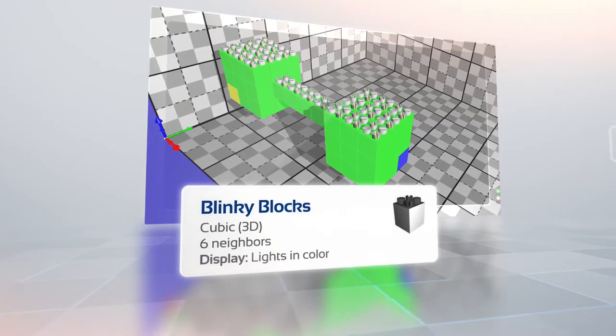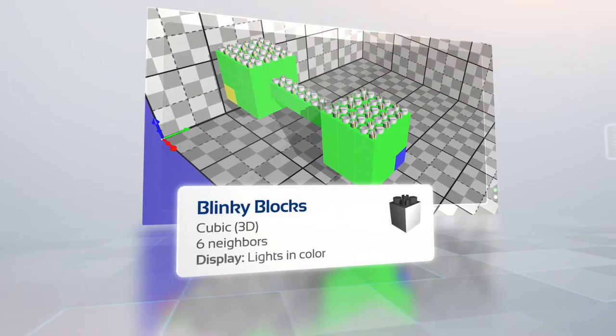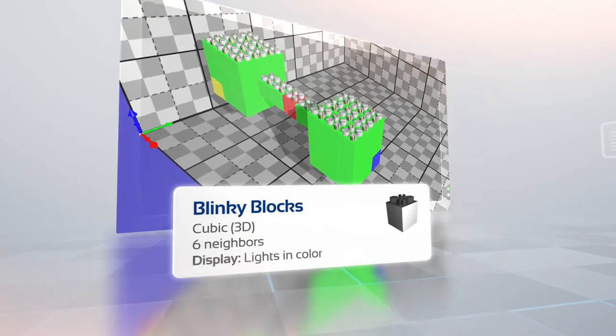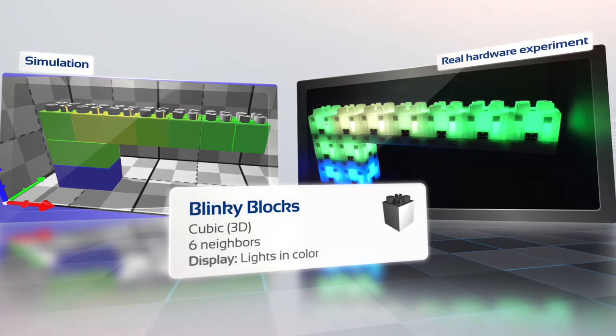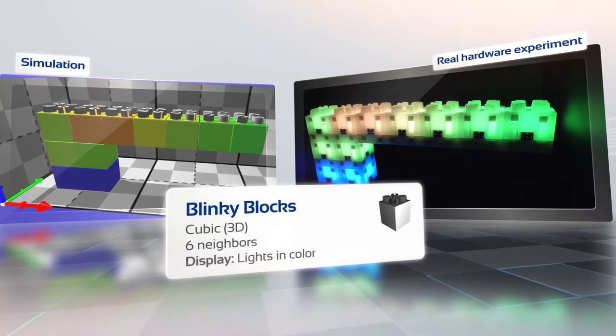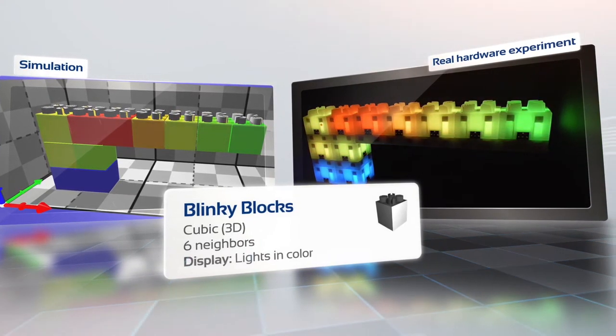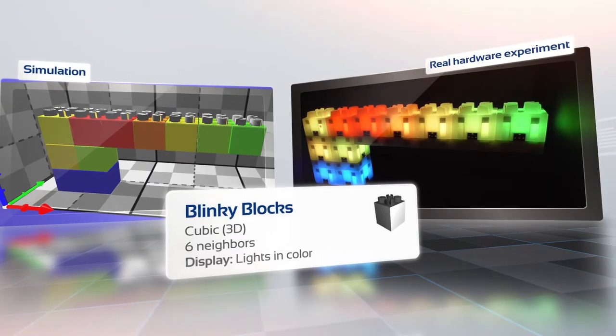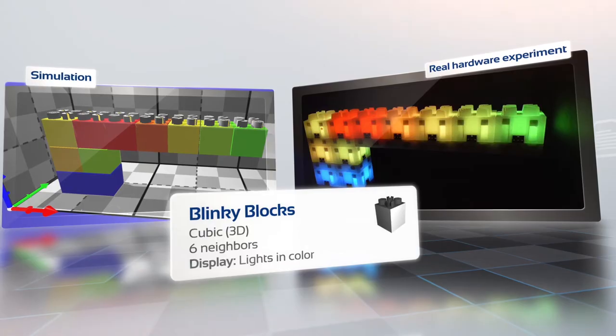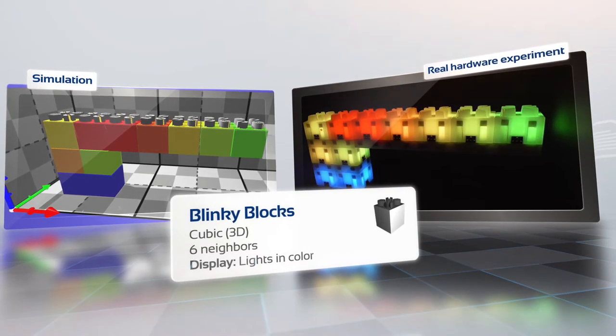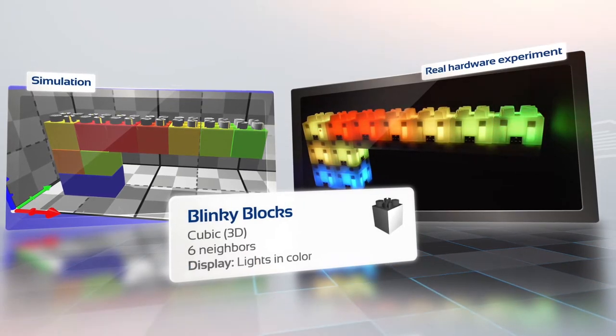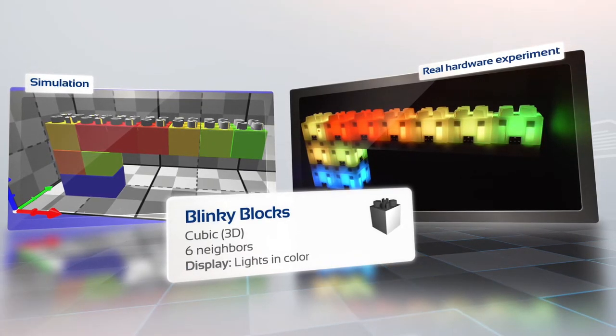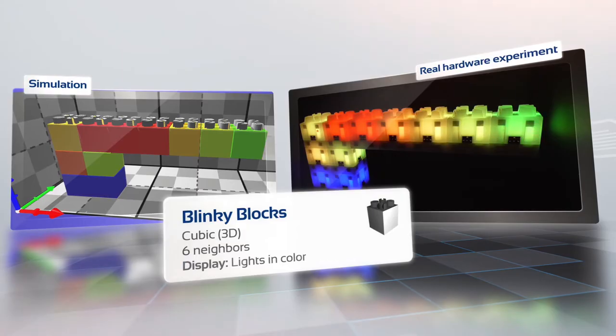BlinkyBlocks are a bit different, as they do not move but can glow in different colors. Real hardware BlinkyBlocks have been fabricated and are fully operational. Simulations made in VisibleSim have been compared to executions on real hardware and have shown the high precision of VisibleSim for distributed algorithms, synchronization time, and mechanical resistance evaluation.